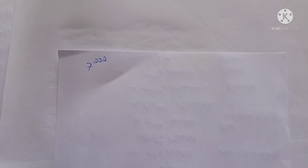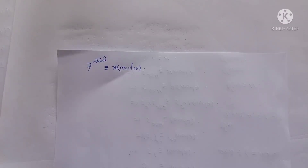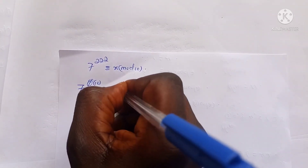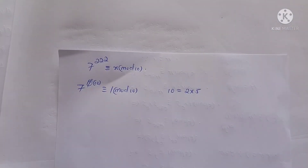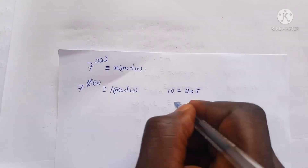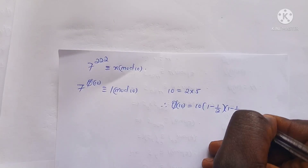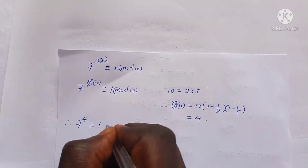Now let's take the first application of Euler's theorem. Let's find the remainder when 7 raised to the power 222 is divided by 10. If that remainder is x, then 7^222 is congruent to x mod 10. From Euler's theorem, 7 raised to the power phi of 10 must be congruent to 1 mod 10. Since 10 equals 2 times 5, phi of 10 equals 10 times (1 − 1/2) times (1 − 1/5), which equals 4. So 7^4 is congruent to 1 mod 10.